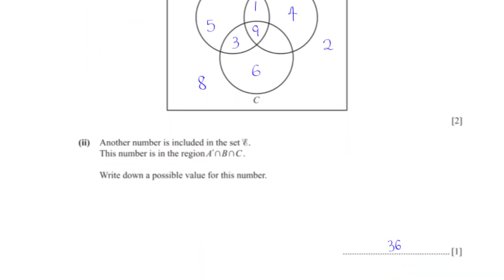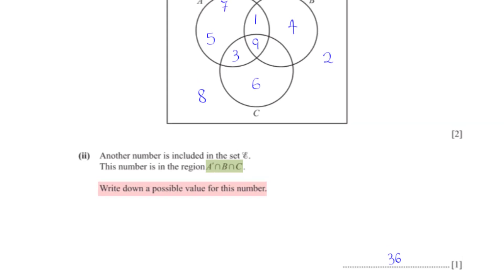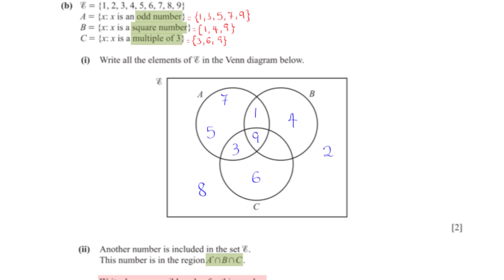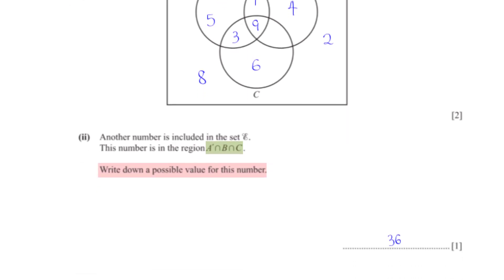Another number is included in set E, in the region A prime intersection B intersection C. We need a number that is not odd, is a square number, and is a multiple of 3. One possible value is 36.